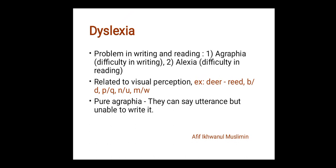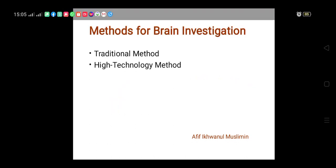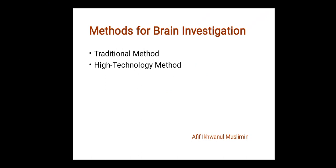Someone with pure agraphia can speak utterances but is unable to write them. For example, when someone says 'How are you?' they understand it is asking about conditions, but they cannot write 'How are you.' Because of these interesting facts about the brain, scientists and doctors carry out brain investigations.